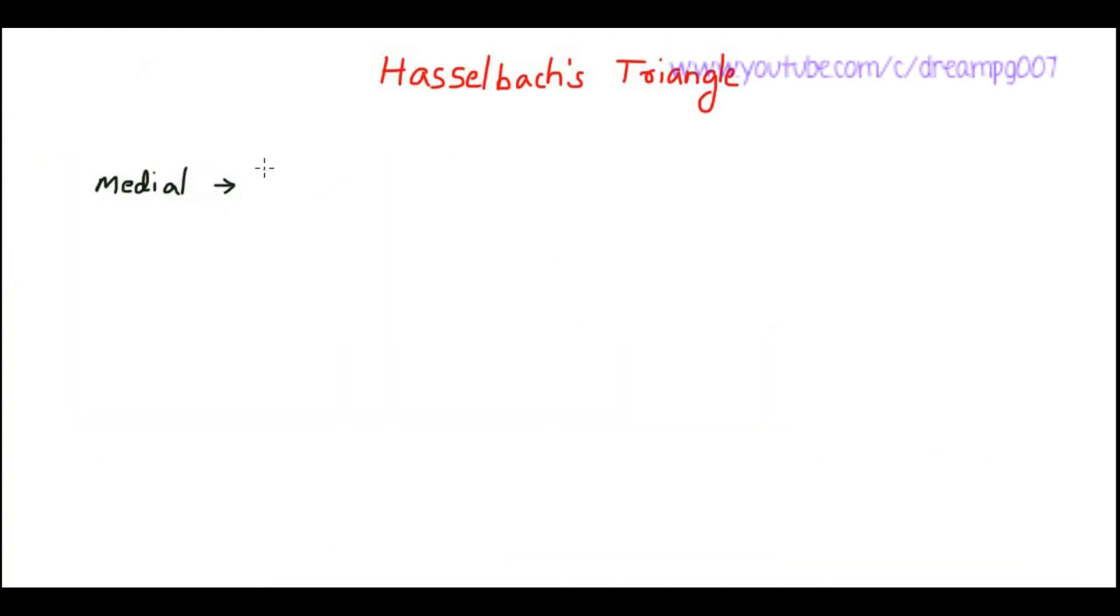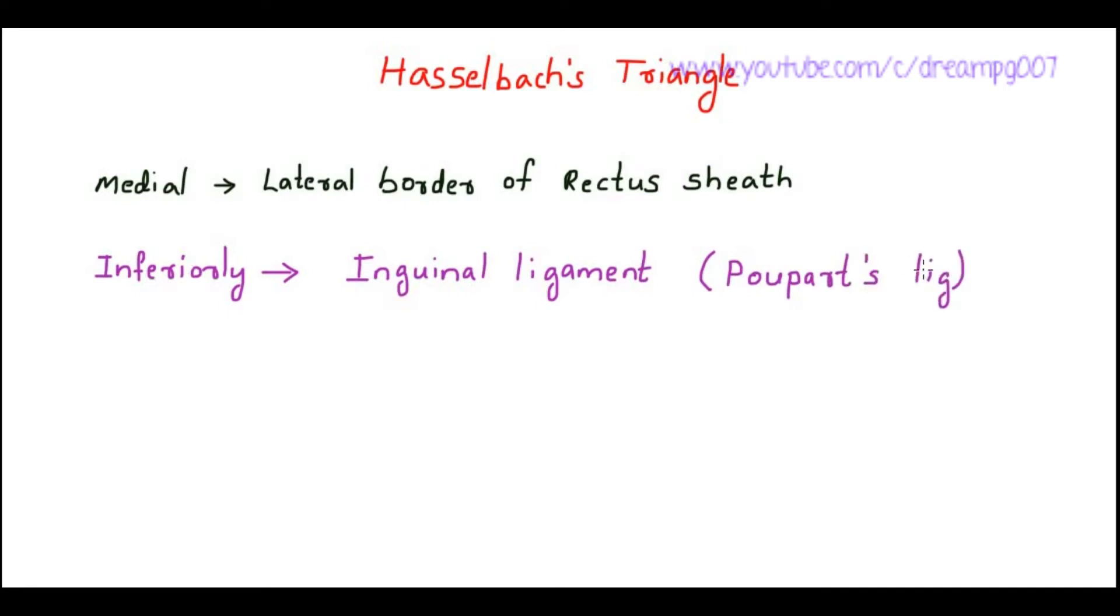So the medial border of that triangle is formed by the lateral border of rectus sheath. Inferiorly it is the inguinal ligament. Inguinal ligament is also called as Poupart's ligament, and superior laterally this triangle is bounded by inferior epigastric vessels.